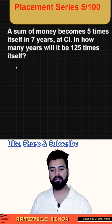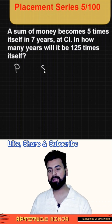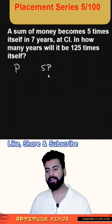If you read the first statement, there is a sum of money. Let's say the sum of money was P, and it becomes 5 times itself. So 5 times of P will become 5P. You need to realize this is P, this is the principal, and 5P is the amount.